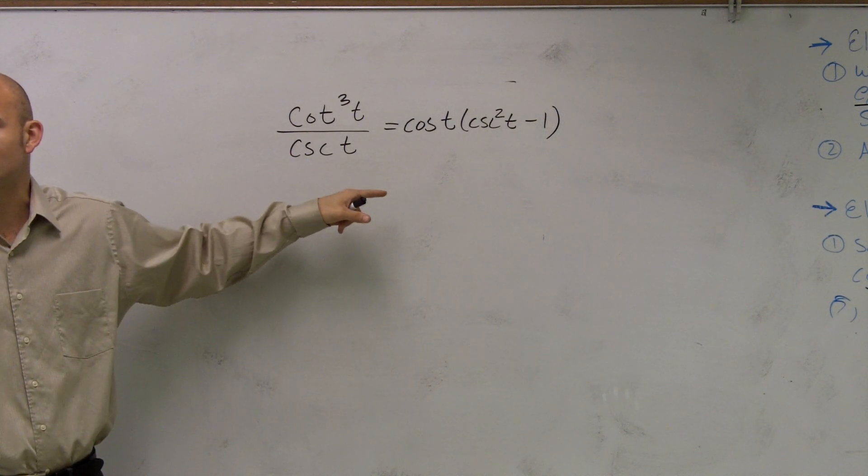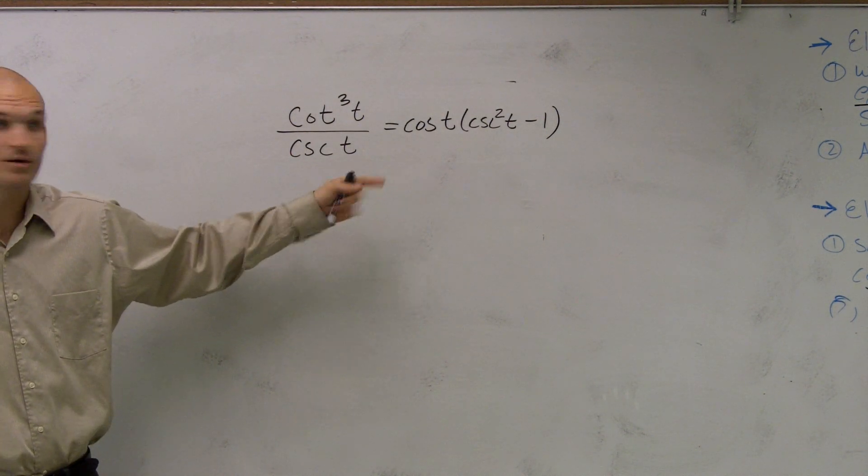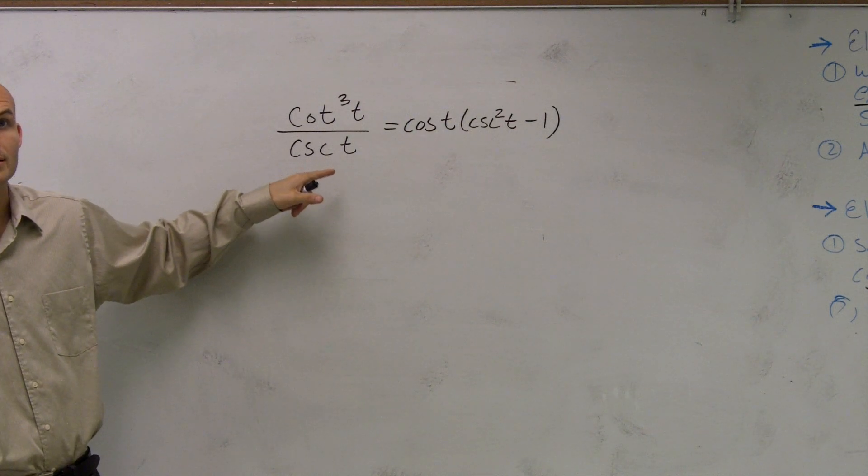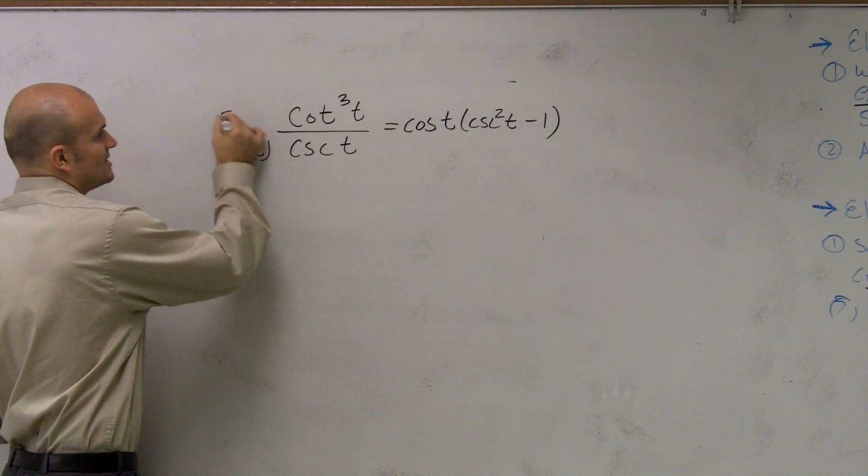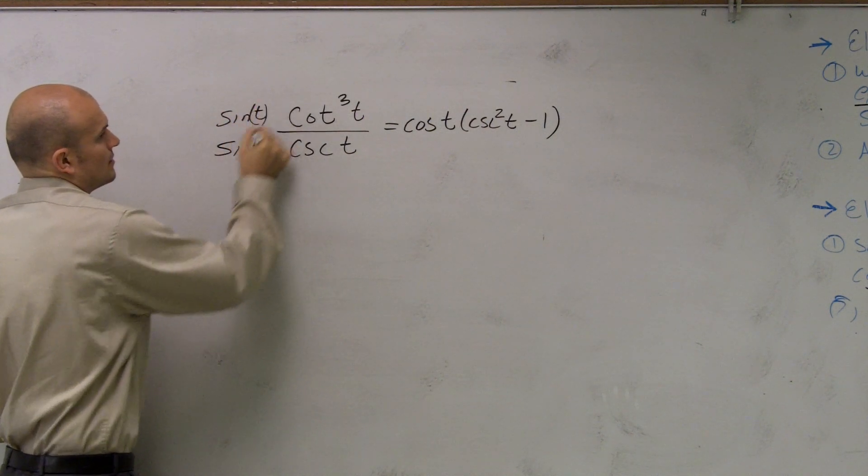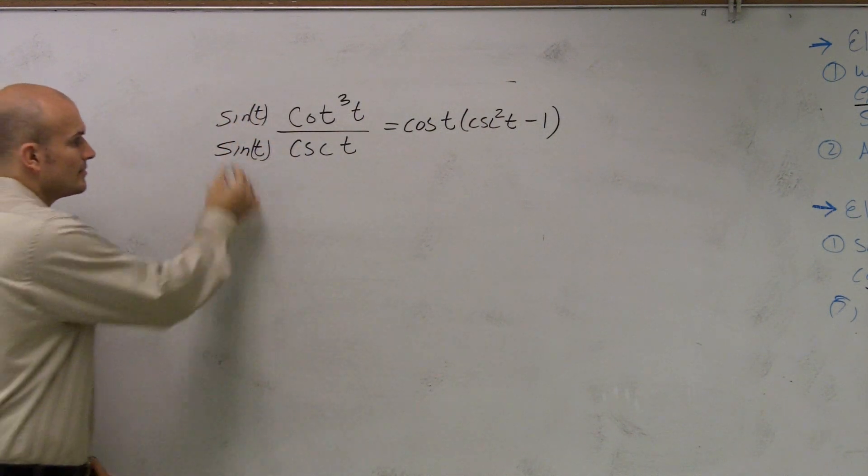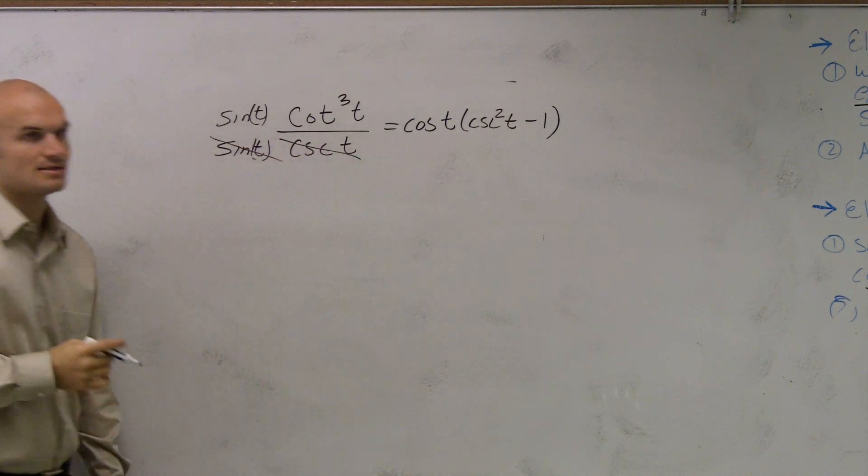The reciprocal. What's the reciprocal of cosecant? Sine. So if I multiply sine of t on your top and bottom, that's going to now cancel out. Right?